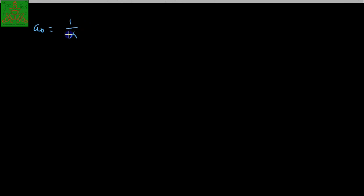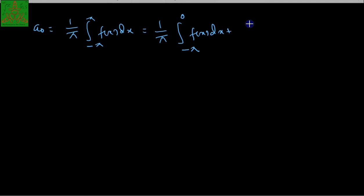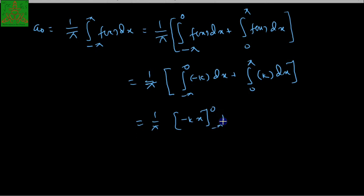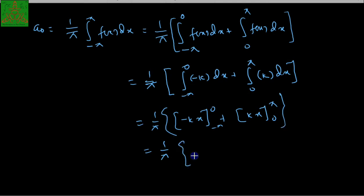We need to calculate a0, an, and bn one by one. a0 is defined as 1 over pi times the integral from minus pi to pi of f(x) dx. Since the function is split into two parts, this becomes the integral from minus pi to 0 of minus k dx plus the integral from 0 to pi of k dx. Substituting gives minus k·pi plus k·pi, so finally a0 = 0.